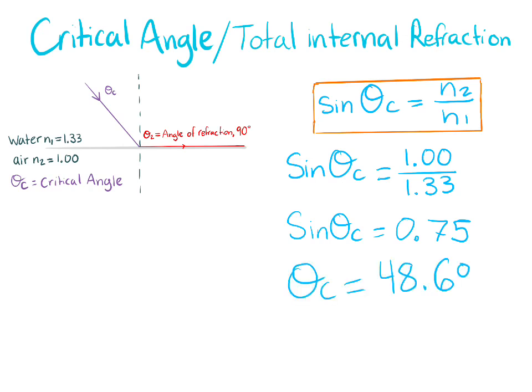Then, from there, you get theta c equals 48.6 degrees, which is the critical angle.